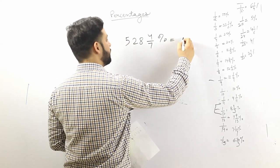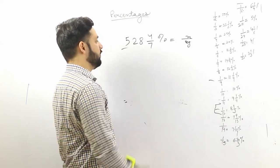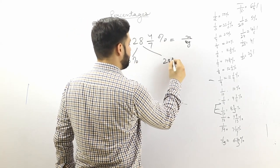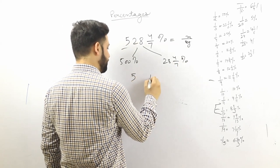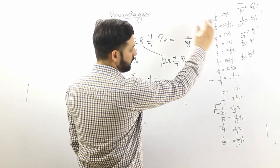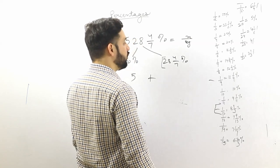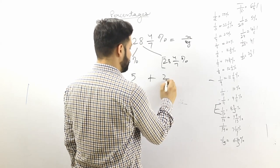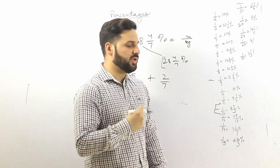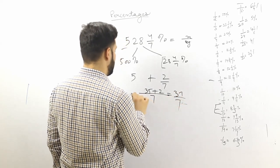Let's convert another percentage into a fraction. We have 528 and 4/7 percent. That's 500 percent plus 28 and 4/7 percent. 500 percent equals 5. Looking at the table, 1/7 = 14 and 2/7 percent, so 2/7 = 28 and 4/7 percent. The answer is 5 and 2/7, or 37/7.